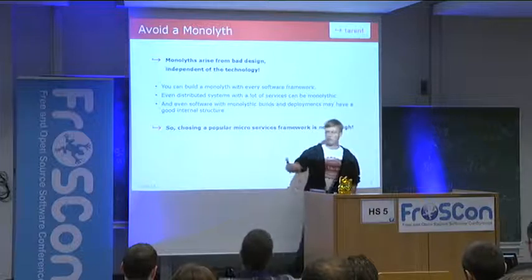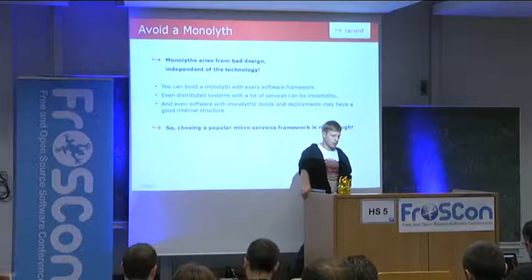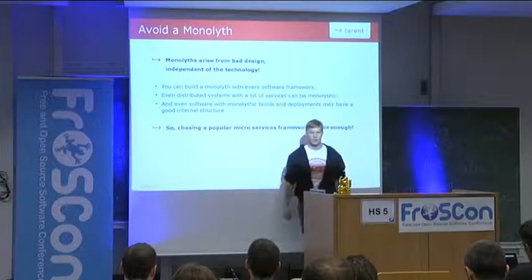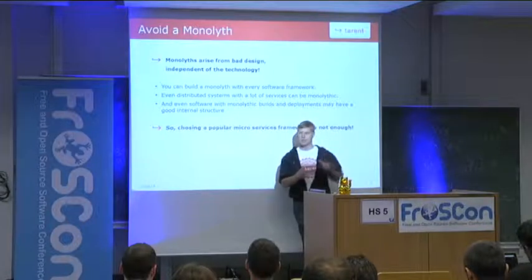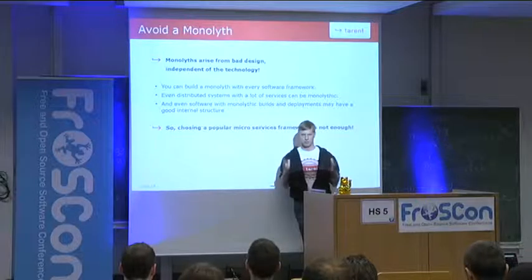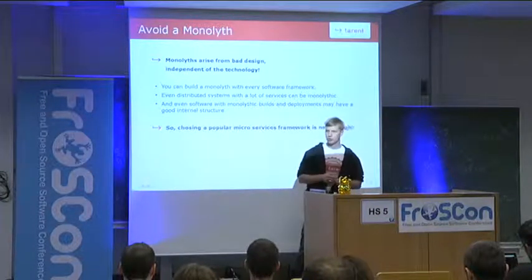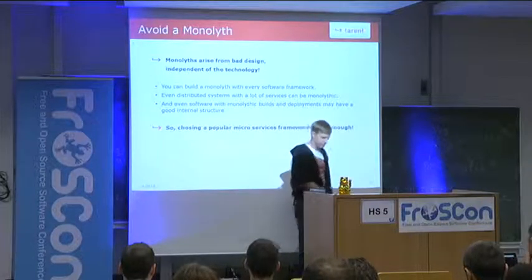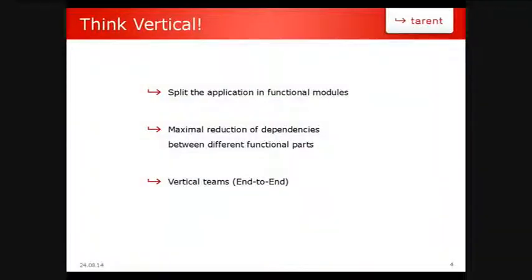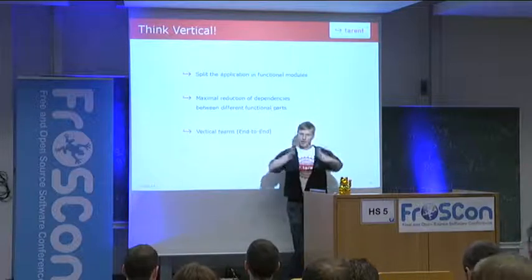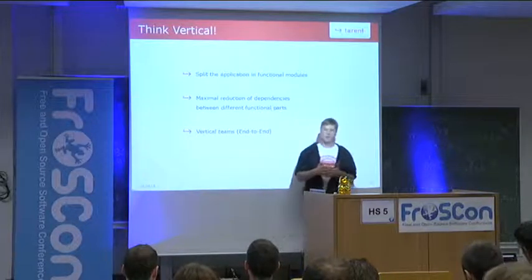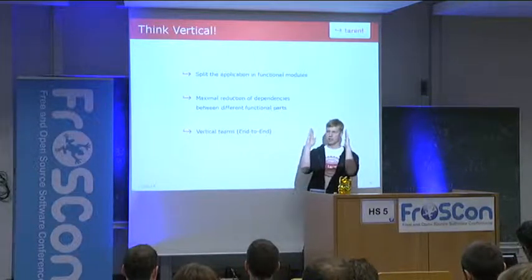If you think you have a monolith, take a very good look at it and see what it really is. Even if you have a big JBoss with JSF and a Java portal, it may be that inside there's a good vertical structure. Think vertical — start from requirements engineering to see what your domain parts are, what columns to divide the application into, then very clearly divide them. Give developers no easy way to bring different functionalities together.